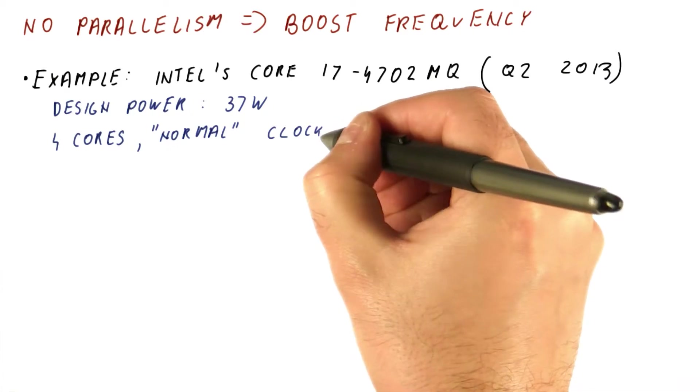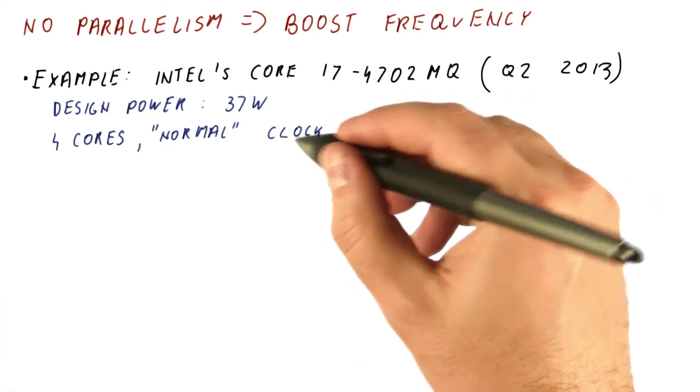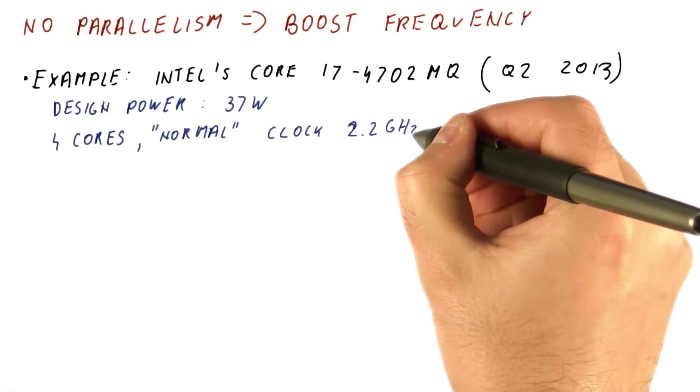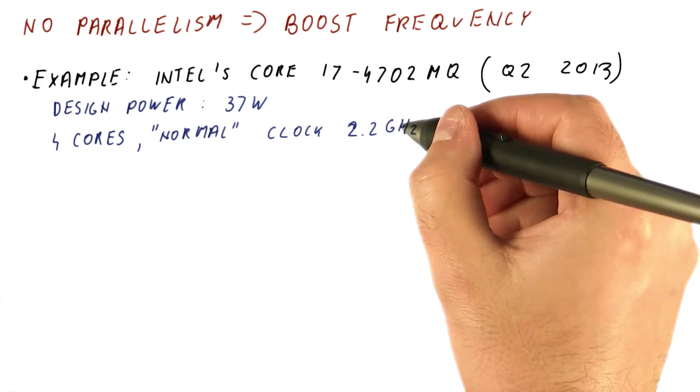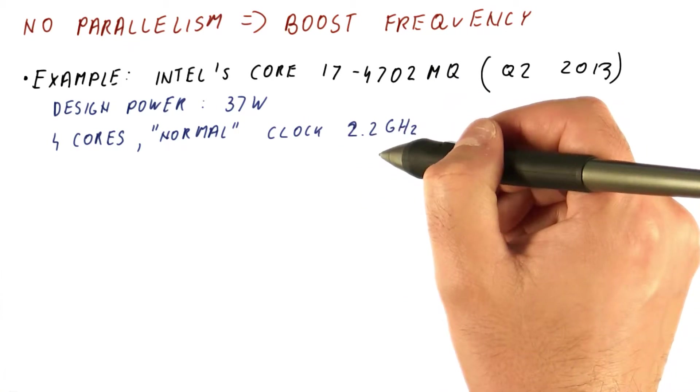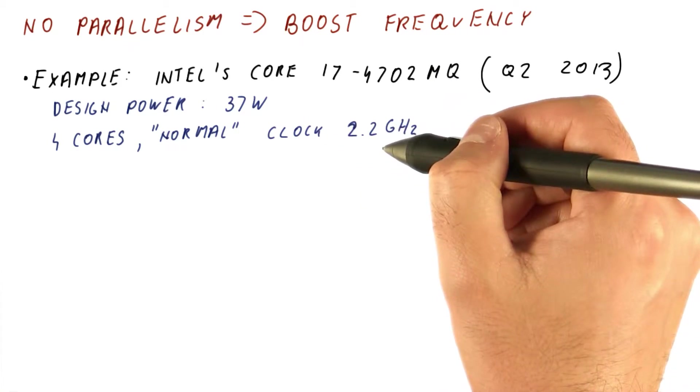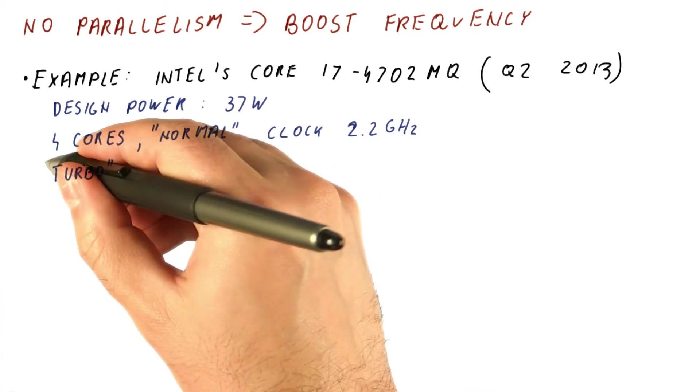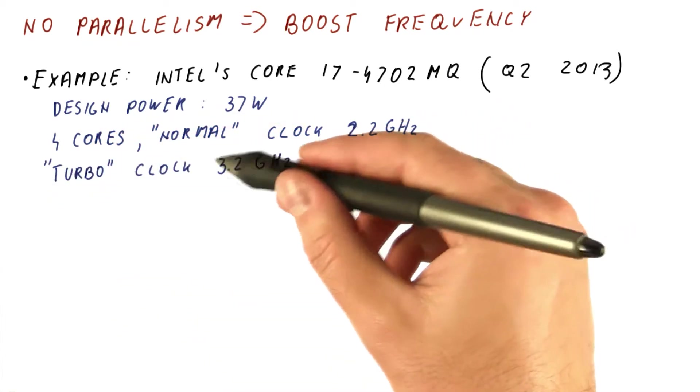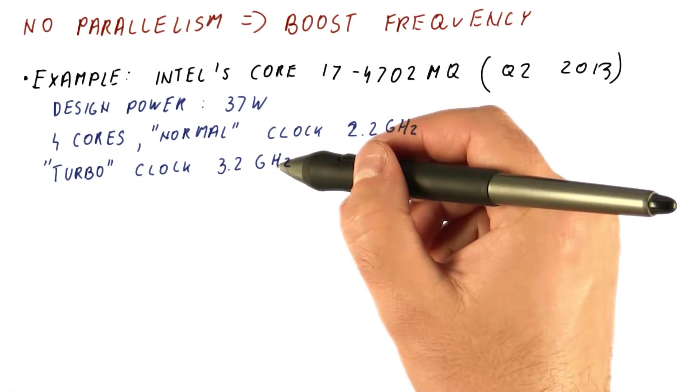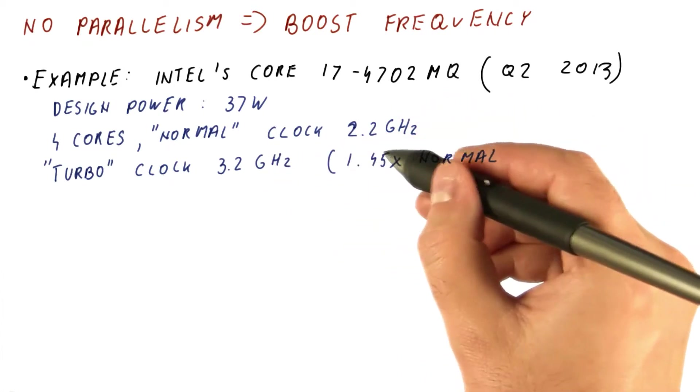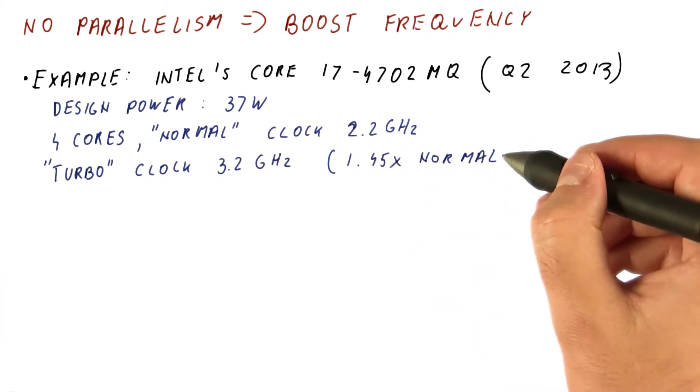It has four cores and its normal clock when using all four cores is 2.2 gigahertz maximum. It can actually save power because it might operate on a battery by reducing this frequency even when running all four cores. But the processor has a turbo frequency of 3.2 gigahertz when running only one core. That frequency is 1.45 times the normal frequency.